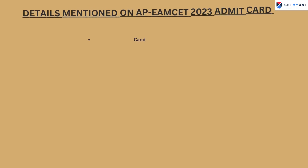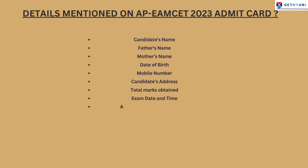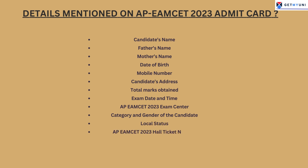Details to verify include: candidate's name, father's name, mother's name, date of birth, mobile number, candidate's address, total marks obtained, exam date and time, AP EAMSET 2023 exam center, category and gender of the candidate, local status, AP EAMSET 2023 Hall Ticket number, and the candidate's photograph, signature, and signature of the convener.